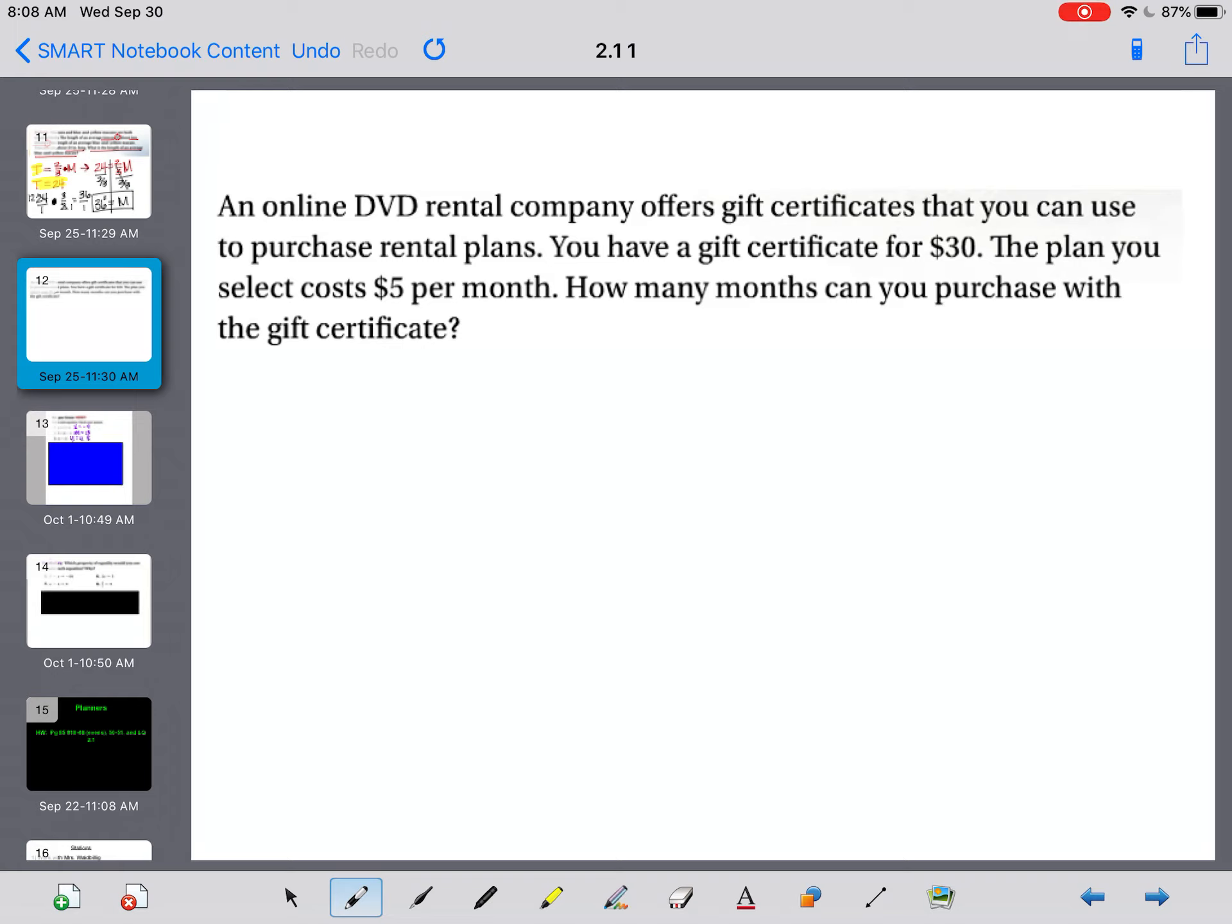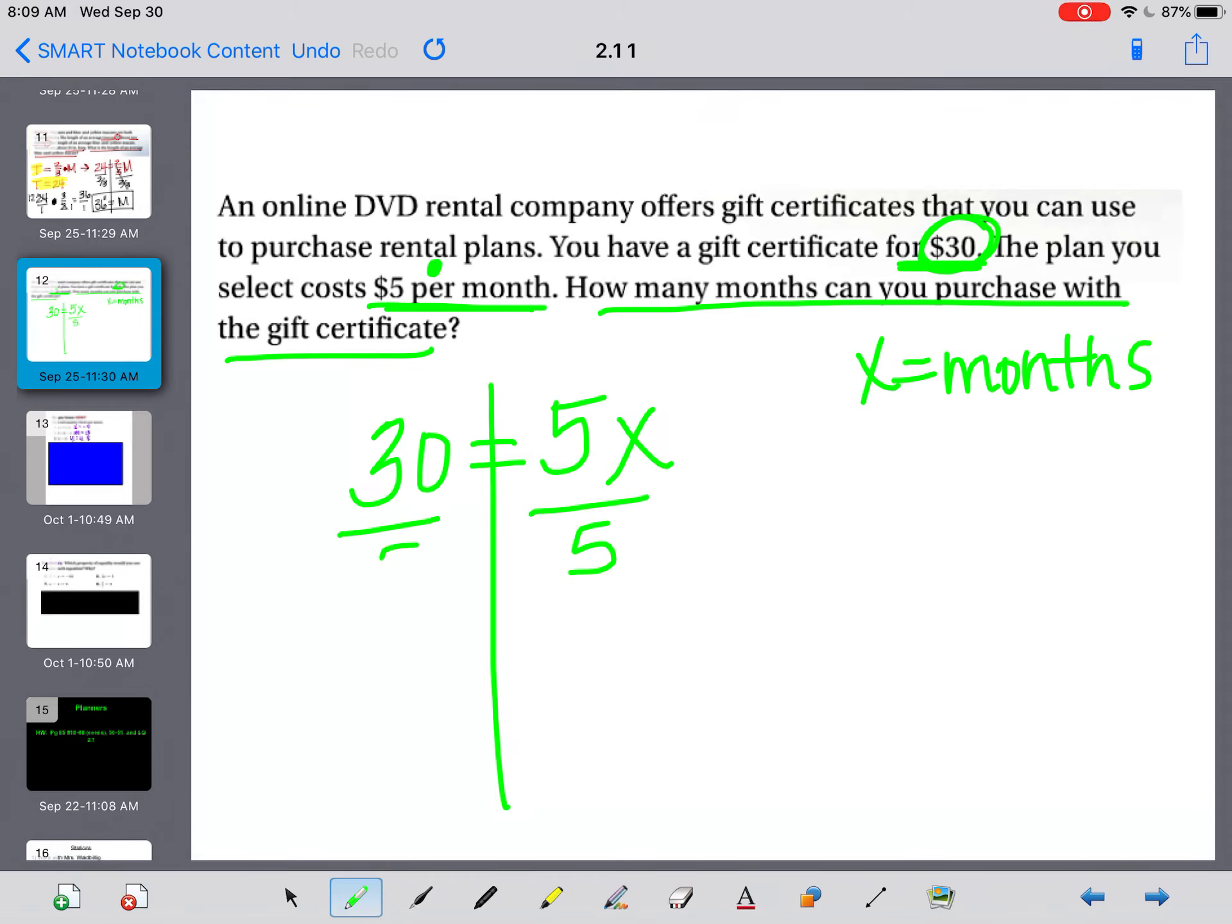An online DVD rental company offers gift certificates that you can use to purchase rental plans. You have a gift certificate for $30. The plan you select costs $5 per month. How many months can you purchase with the gift certificate? First of all, we have to write our equation. 30 is our total amount. That's the most we can spend. So we're going to start with that. And if that's our total, that goes on one side of the equal sign. Then this $5 per month, we have to think back to what per means. Usually per tells me that I'm multiplying $5 each month. So 5x. I'm just going to say x is months. To solve this one, I'm going to draw my train tracks. And the opposite of multiplying 5 and x is to divide by that 5. So x should be 6 months. I have enough money on that gift certificate to pay for 6 months if I'm only paying $5 per month.